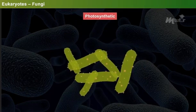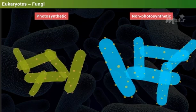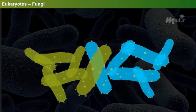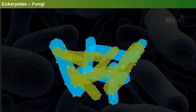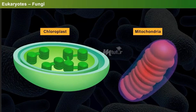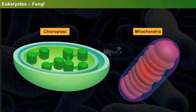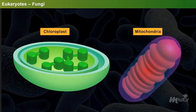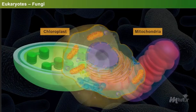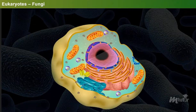The prokaryotes paved the way for the evolution of eukaryotic organisms. During this evolution process, the photosynthetic and non-photosynthetic bacteria incorporated themselves as chloroplasts and mitochondria in the evolving eukaryotic organisms.